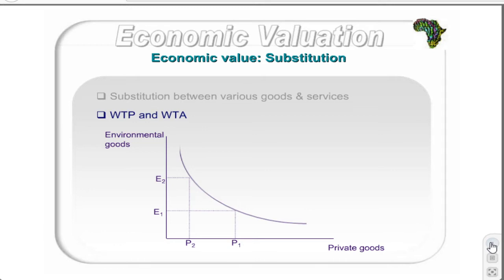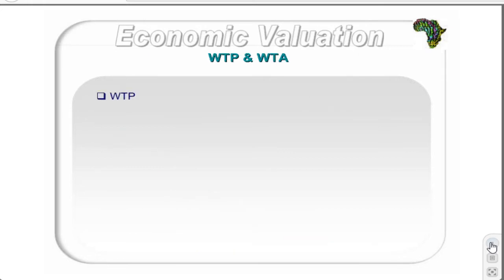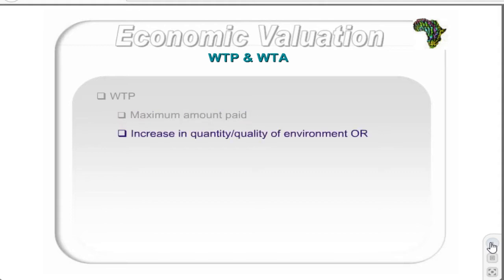To gain an improvement in environmental goods, this individual is willing to pay P1 to P2 private goods. The same individual is willing to accept compensation of P1 to P2 private goods to accept the decline in environmental goods from E2 to E1. However, these concepts can also be expressed in monetary terms. Willingness to pay is the maximum amount that an individual would be willing to pay for an increase in the quantity or quality of some good or service, or to avoid a decrease in the quantity or quality of the good or service.